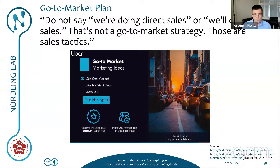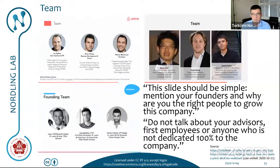Over to the team slide. To quote Kaja, this slide should be simple. Mention your founders and why you are the right people to grow this company. Do not talk about advisors, first employees, or anyone who is not dedicated 100% to the company. For example, YouTube lists the three co-founders — Steve Chen, Chad Hurley, and Jawed Karim — and under each lists some of their experiences and qualities that make them together a winning team that can implement the business successfully.